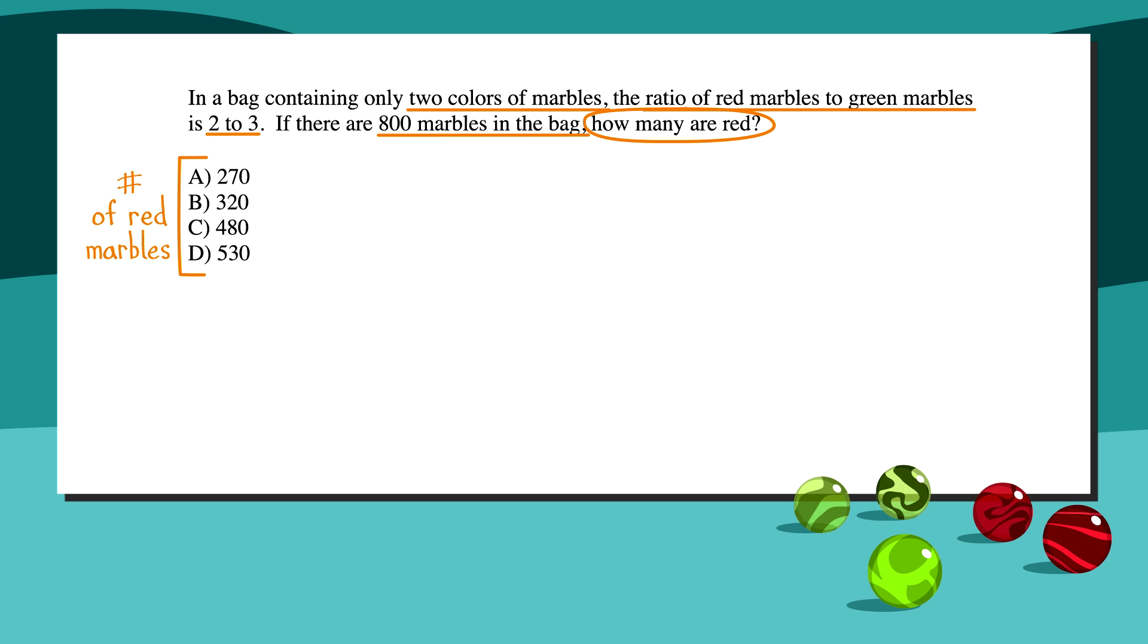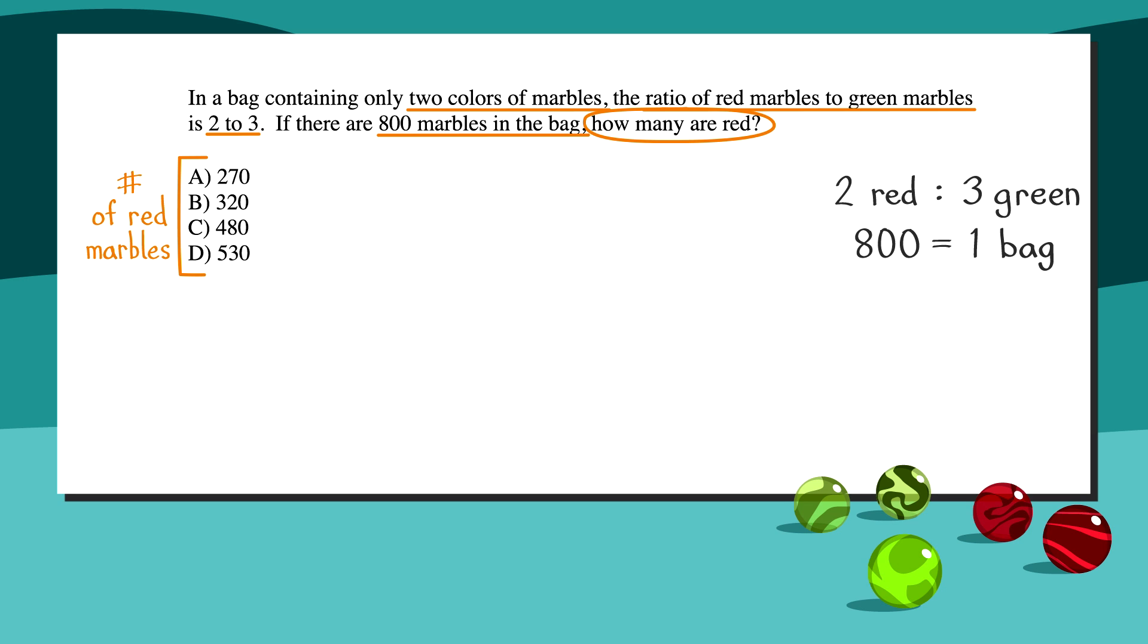We're told that the ratio of red to green marbles is 2 to 3, and that there's a total of 800 marbles in the bag. We have the information we need, but what do we do with it now? We need to write a pair of equivalent fractions. To do this, we write part over whole equals part over whole. We need to set up an equation using this information.